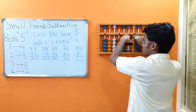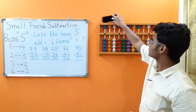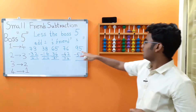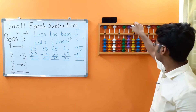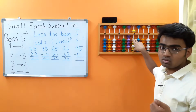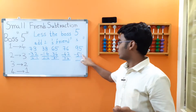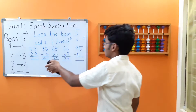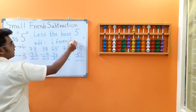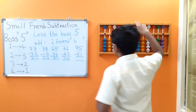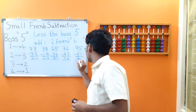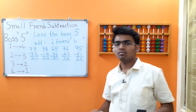On to the last sum: 95 minus 51. 9 minus 5 — we can do that directly. 5 minus 1: we do not have any beads here, so make use of the small friends concept. 1's friend is 4 — less the boss 5, add 1's friend 4. We got the answer as 44.